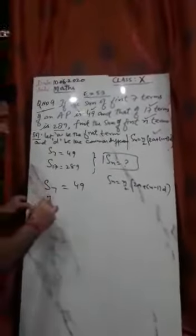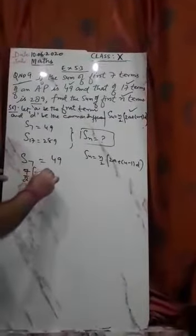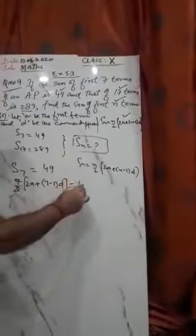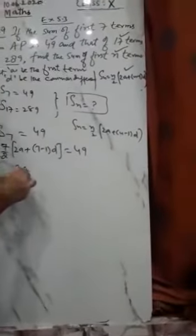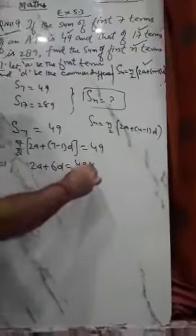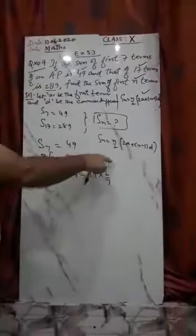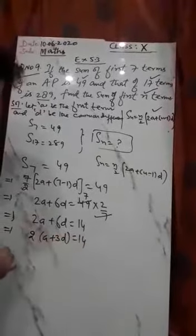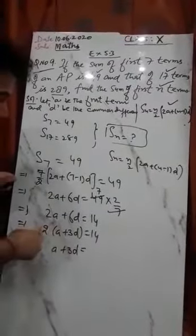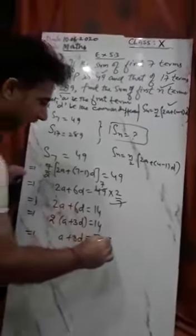So S7 = 7 upon 2 into [2a + (7 minus 1) into d] = 49. That gives us 7 upon 2 into [2a + 6d] = 49. Bringing 7 by 2 to the other side: 2a + 6d = 49 into 2 upon 7 = 14. Taking 2 common: a + 3d = 7. So a = 7 minus 3d — call this equation (1).